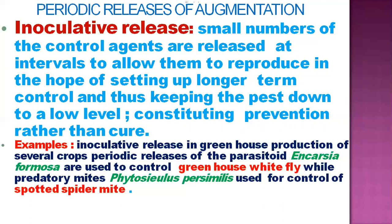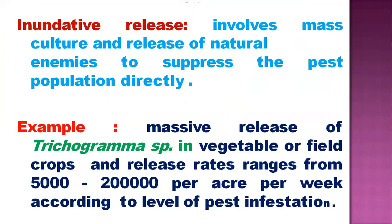An example of inoculative release is in greenhouse crop production, where the parasitoid Encarsia formosa is periodically released to control the greenhouse whitefly. In the same greenhouse, two predatory mites known as Phytoseiulus persimilis are used as natural enemies to control spider mites. These are examples of inoculative release.